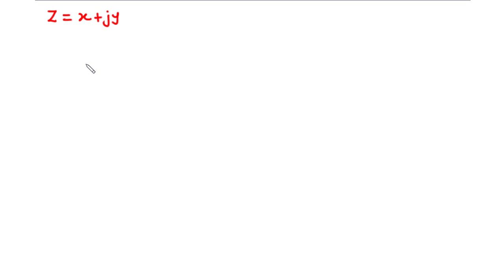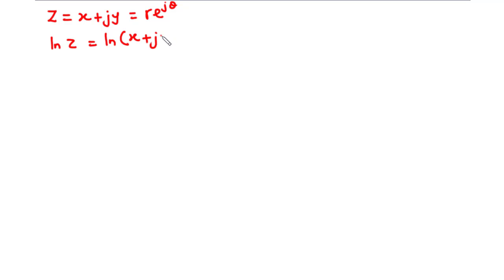In today's video, we are going to learn how to find the logarithm of complex numbers. Given a complex number z equal to x plus jy, we can represent this in the exponential form as r times e exponent j theta. Now, to find the logarithm of z, let's take the log of all three terms. So ln z equals ln(x + jy) equals ln(r times e exponent j theta).